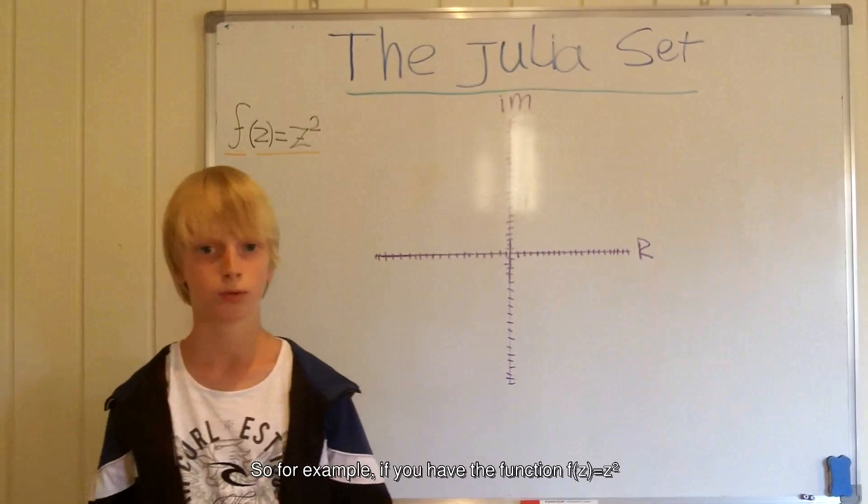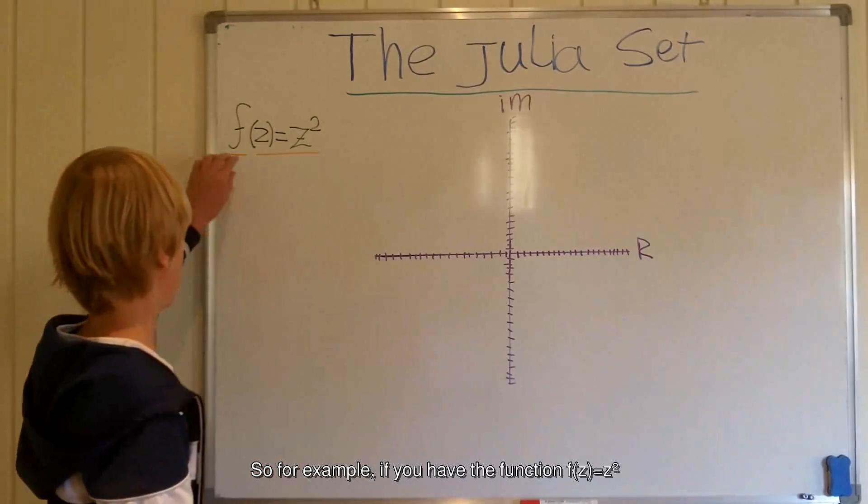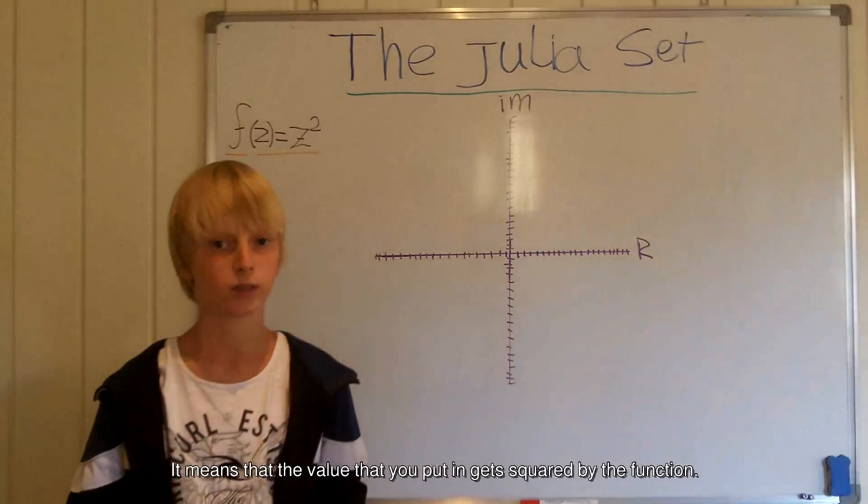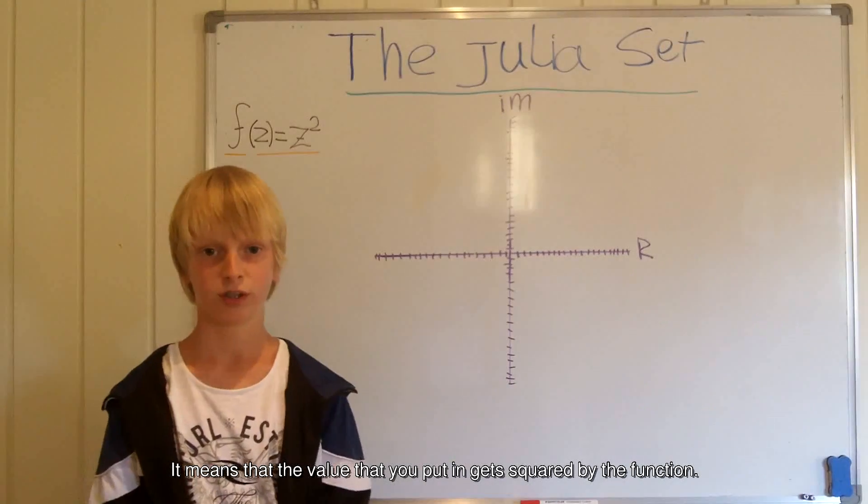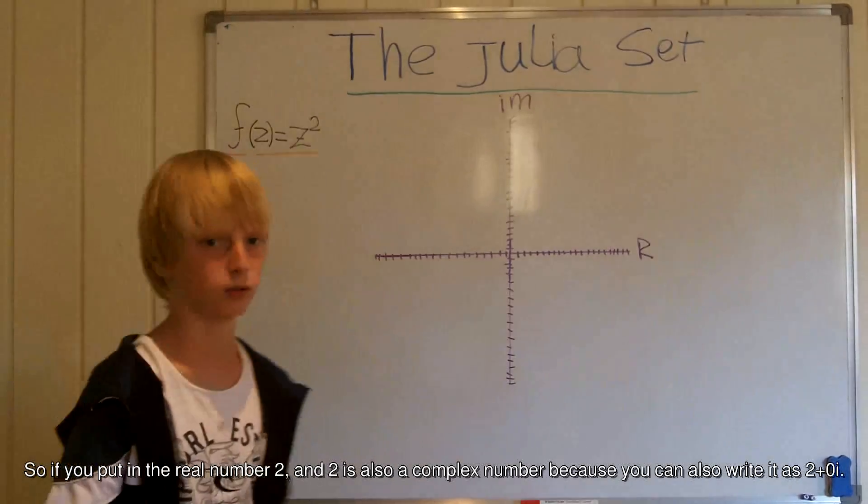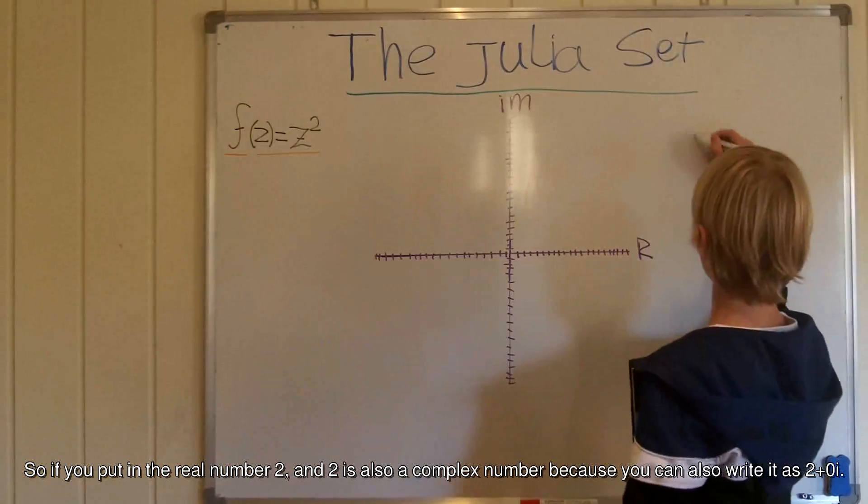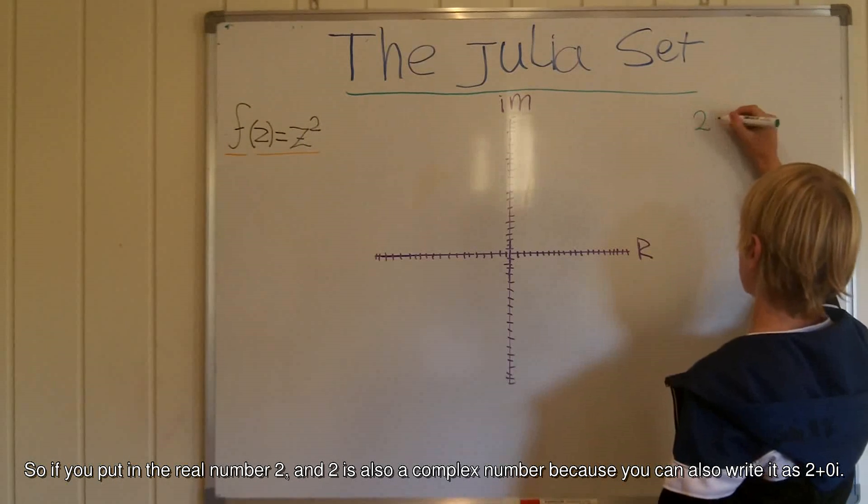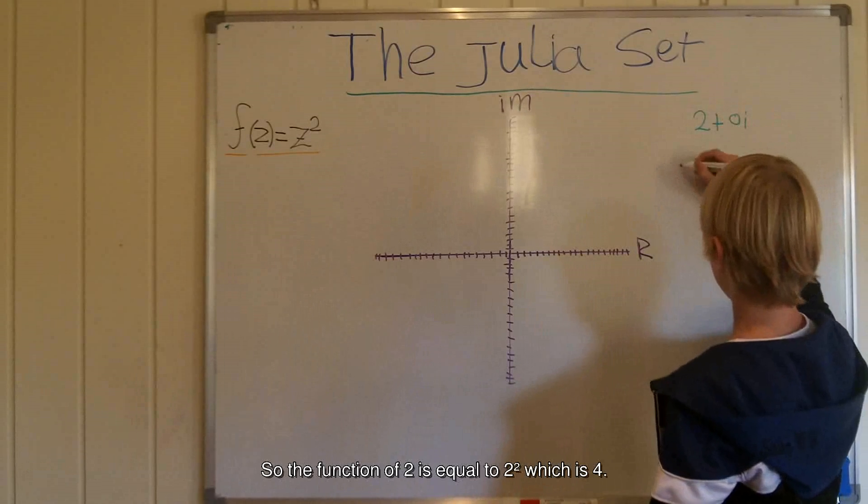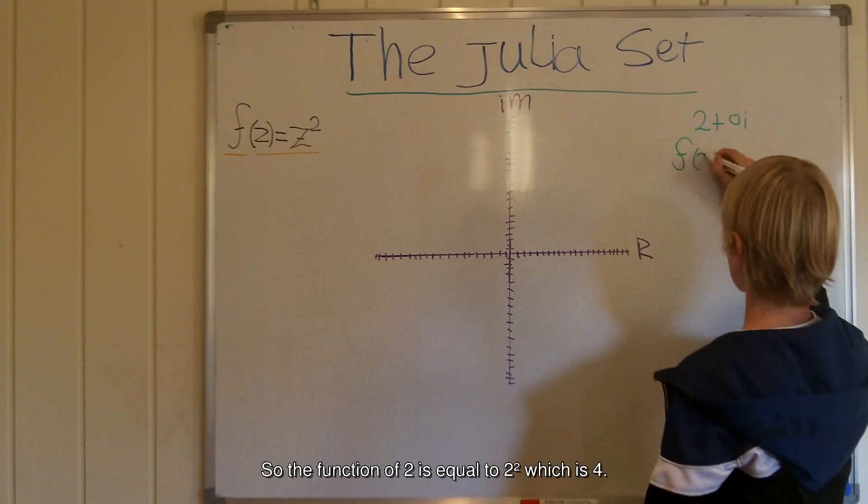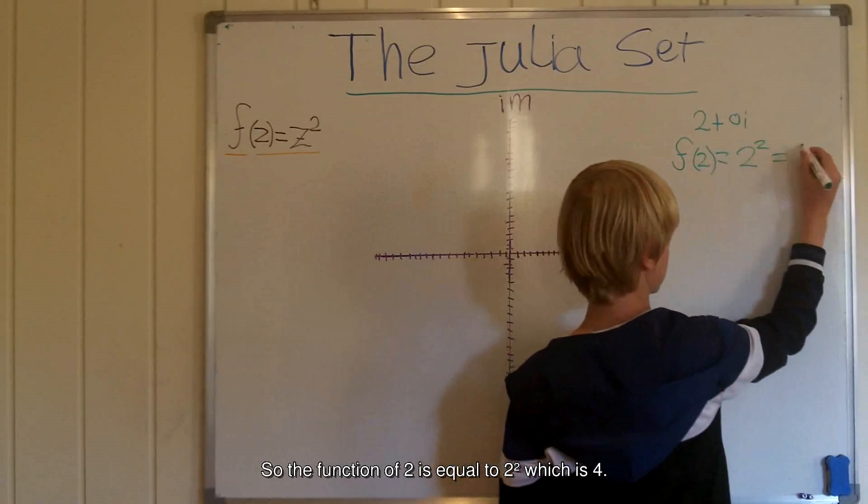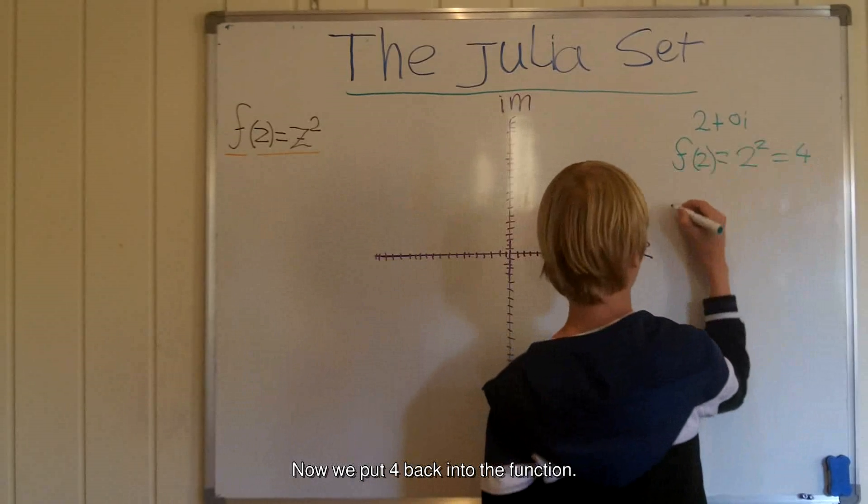So for example, if your function f is equal to z squared and z is some complex number, it means that this value that you put in gets squared by the function. So if you put in the real number 2, 2 is also a complex number because you can also write it as 2 plus 0i. So the function of 2 is equal to 2 squared which is 4. Now we put 4 back into the function.